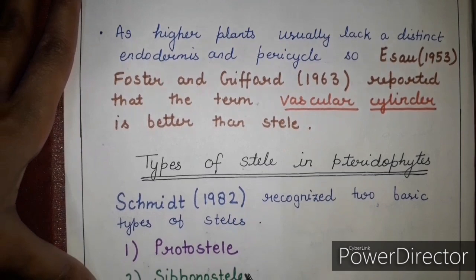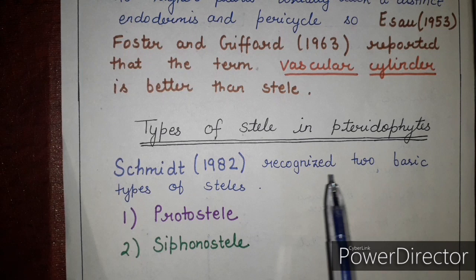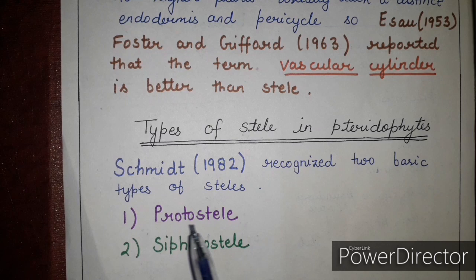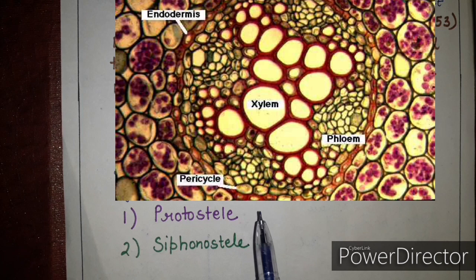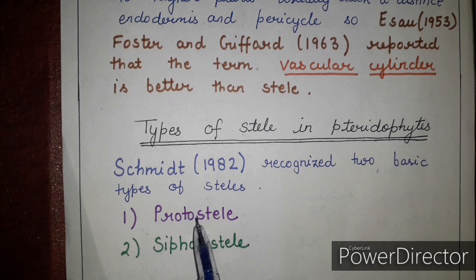The main topic now is the types of steles in pteridophytes. Schimidit in 1982 recognized two basic types of stele: protostele and siphonostele. The basic characteristic of protostele is that pith is absent — it is also called non-medullated stele. Siphonostele contains a pith and is the more advanced form. So on the basis of presence or absence of pith, steles are classified into protostele and siphonostele.